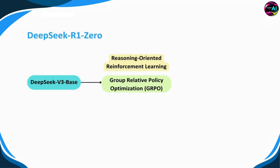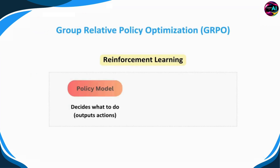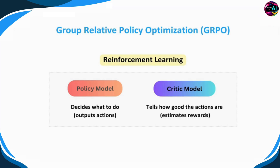But what exactly is GRPO and why is it important? In any reinforcement learning system, there are two key components. The first is the policy model, which decides what actions to take. The second is the critic model, which evaluates how good those actions are and helps estimate rewards. Typically, the critic model is as large as the policy model, making RL models computationally expensive and difficult to train. To simplify the reinforcement learning process, DeepSeek eliminated the need for a critic model by using GRPO, an approach specifically designed to streamline and improve RL training.